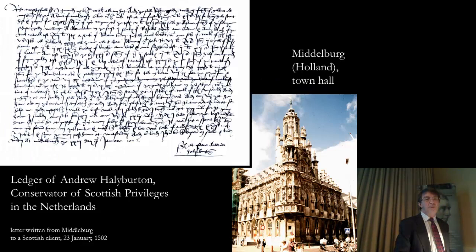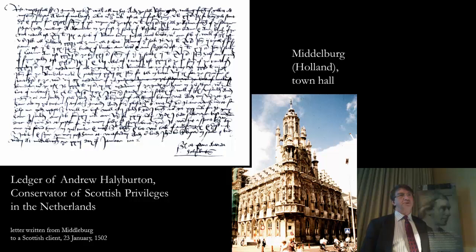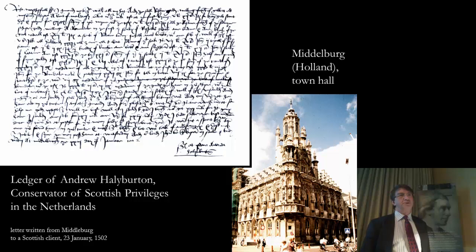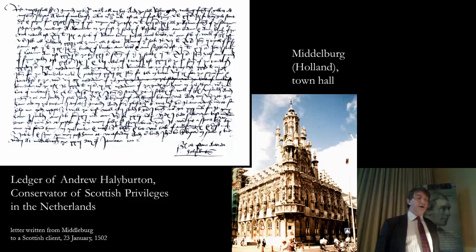Andrew Halliburton was operating from Middelburg in the late 15th and early 16th century. He was the conservator of Scottish privileges in the Netherlands, and much of his correspondence has survived, giving us a tremendous insight into the sorts of things that people in Scotland were buying from the Netherlands - it really was a quite extraordinary range of things. It includes things like church furnishings, which were especially highly valued really pretty much throughout the Western world, including Italy. It was also a good place to buy a tombstone for yourself.